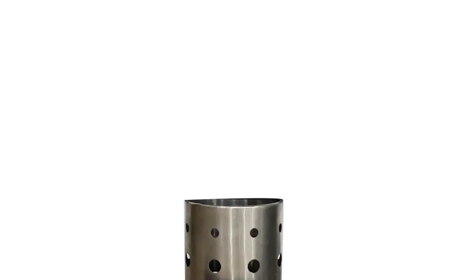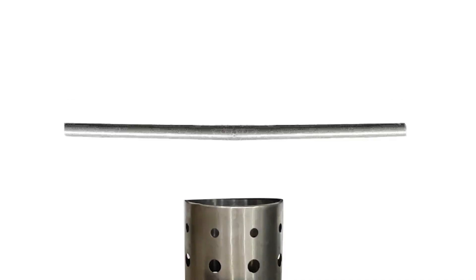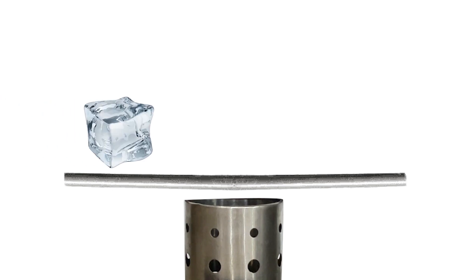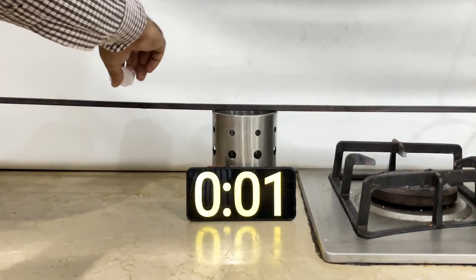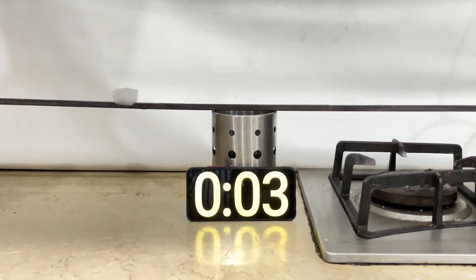For this experiment we need a supporting object, a metal rod, ice cube, and a stove or burner. The experiment is divided into two phases. In the first phase we've placed an ice cube on the rod and observe the time it took to melt.